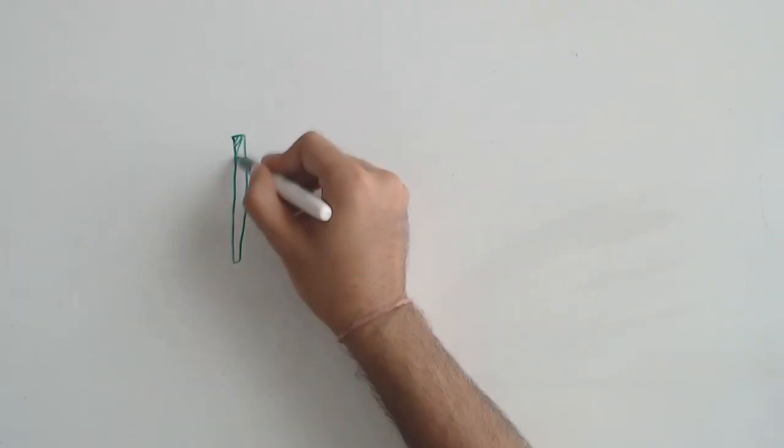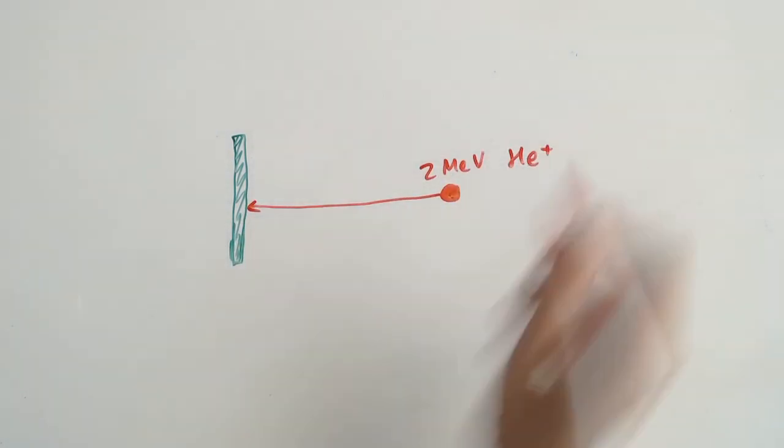Now consider a beam of particles hitting a sample, and a detector placed at some angle to capture the backscatter.